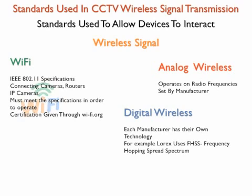The frequency of digital wireless cameras is also determined by the manufacturer, so if you would like to expand your system, you will have to purchase additional cameras from the original manufacturer. Because the signal is sent digitally, there is very little interference, and the cameras are capable of documenting video, audio, and receiving commands for pan, tilt, and zoom. Wi-Fi cameras are manufactured according to the standards of IEEE 802.11.